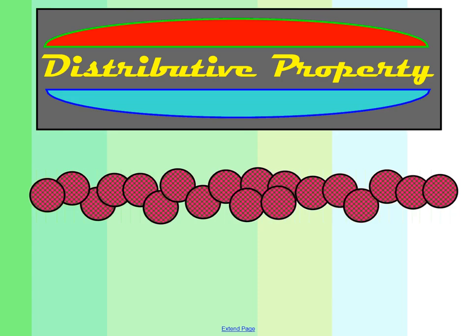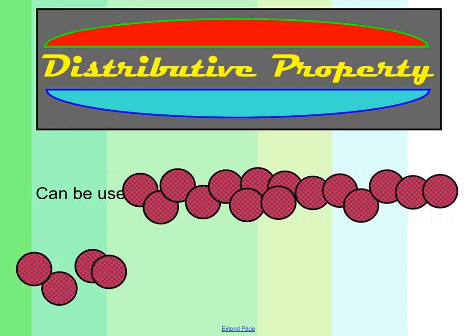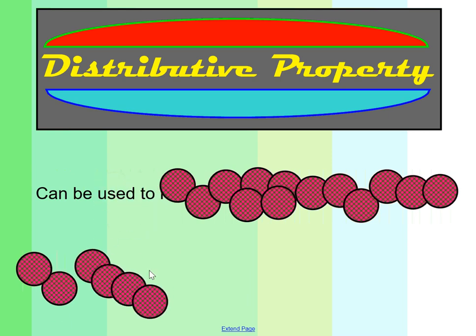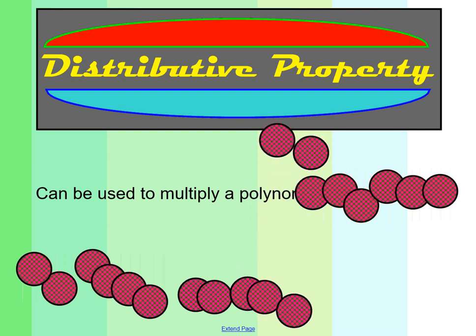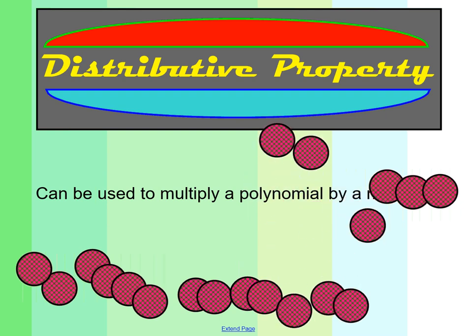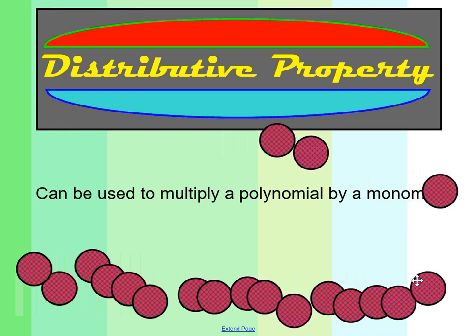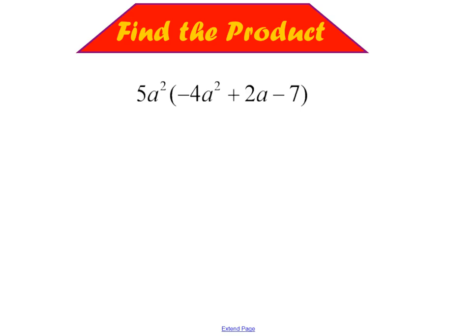The first thing we have to talk about today is the distributive property. We're going to be using that. The distributive property can be used to multiply a polynomial by a monomial. So let's go ahead and use that to help us out here.